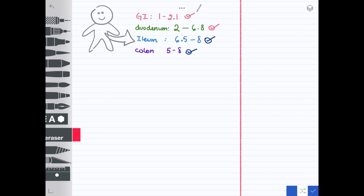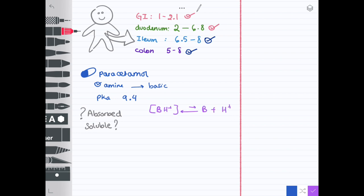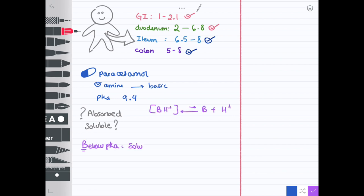Let's take another example—paracetamol. Paracetamol is a basic drug and it's an amine. Its pKa is 9.4. Where is it absorbed and where is it soluble? Because it's a basic drug, we can take that shortcut again without using the equation. Below the pKa, it's soluble. It would be soluble in the stomach and upper part of the GI and absorbed in the intestine.